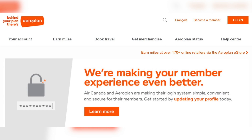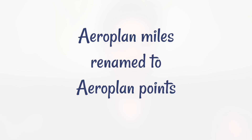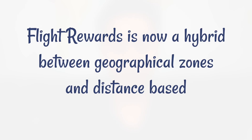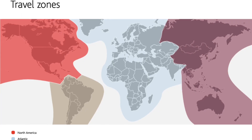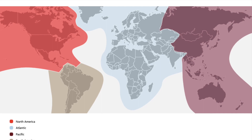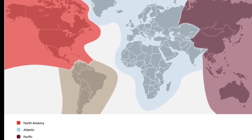So first, what is new with the new Aeroplan program versus the old program? The old Aeroplan website is no longer in use — instead you will be using the Air Canada website. Aeroplan miles has also been renamed to Aeroplan points, and fuel surcharge has been eliminated. Flight rewards is now a hybrid between geographical zones and distance base, and there are four zones: North America, Atlantic, Pacific, and South America.